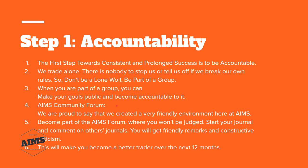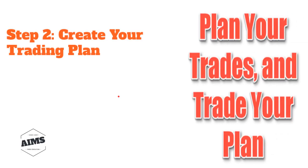As we go through the next steps you will know why accountability is at the top. Keeping a journal and following these steps will make you a better trader over the next six to twelve months. Step two is to create your trading plan. This is connected to the first one — accountability is the most important thing when it comes to trading success.